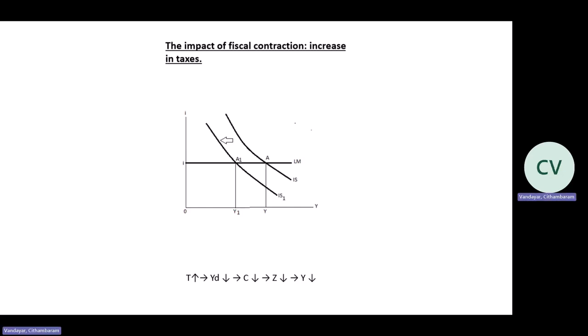The government decided to keep government spending intact and decided to increase taxes. An increase in taxes is a contractionary fiscal policy, and this will result in a leftward shift in the IS curve from IS to IS1. There will be a movement along the LM curve from A to A1, and your new equilibrium level of income and output is Y1. At A1, your goods market is in equilibrium with the financial market, and your new equilibrium level of income and output is Y1. Chain of events: an increase in taxes will decrease your disposable income, consumption will decrease, your demand for goods and services will decrease, and the level of income and output will decrease.